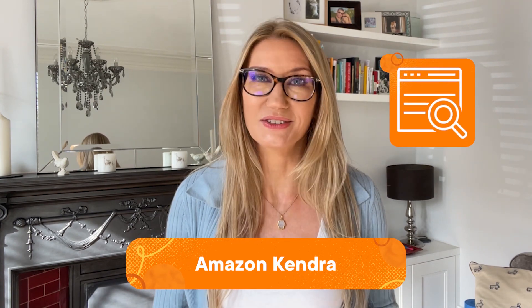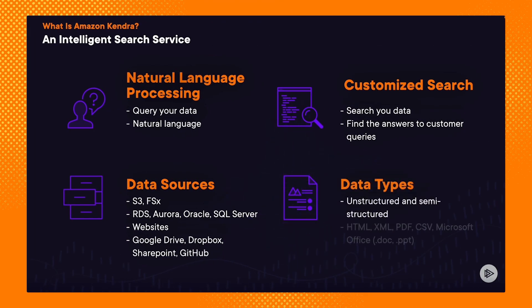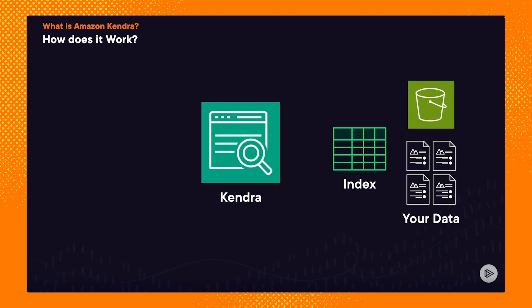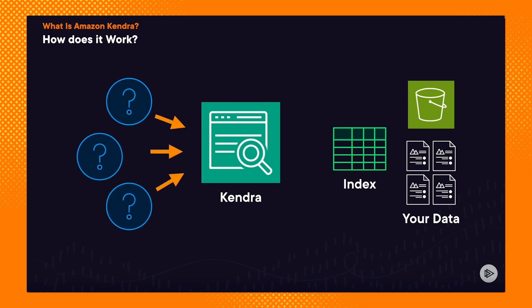Number two is Amazon Kendra. Kendra is an intelligent search service that allows you to query your data using natural language. It supports data stored in S3, RDS, or even public websites, or external shared drives like Google Drive, Dropbox, or GitHub. Kendra supports both unstructured and semi-structured data types like CSVs, HTML, XML, PDFs, or Microsoft Office documents. After providing your data to Kendra, it will create a searchable index that you can query using natural language instead of writing any code. You can ask questions like, what is the deadline for applying security updates? or how do I return a faulty item? and Kendra will retrieve the answers from your data.